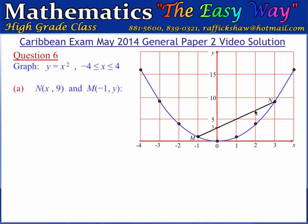We are given on the diagram a line segment such that M is the point (-1, y) and N is the point (x, 9). The first part wants us to find the value of x and the value of y. The x-coordinate at the point N is 3, because 3 squared is 9, so x equals 3 satisfies the coordinates of point N.